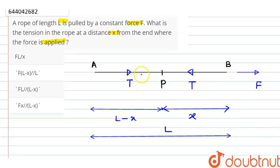Let us assume that capital M is the mass of rope, and force F is applied at the end B as shown in figure.